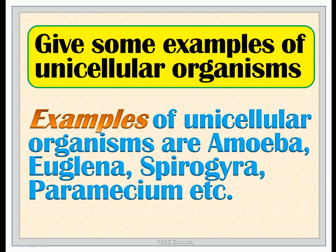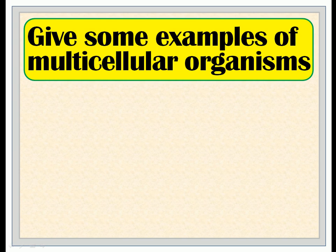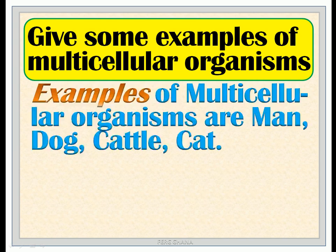Examples of unicellular organisms are: amoeba, euglena, spirogyra, paramecium, etc. Examples of multicellular organisms are: man, dog, cattle, cat.